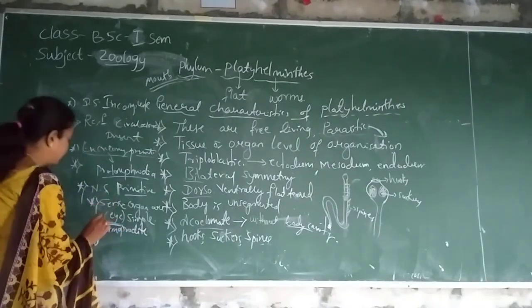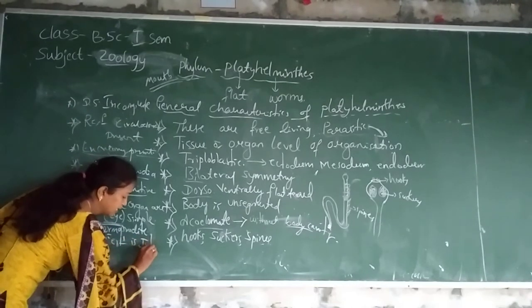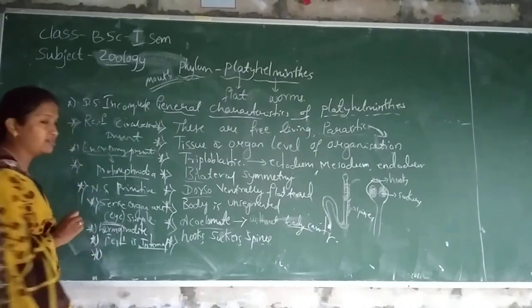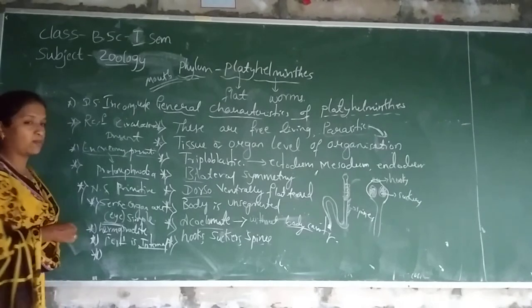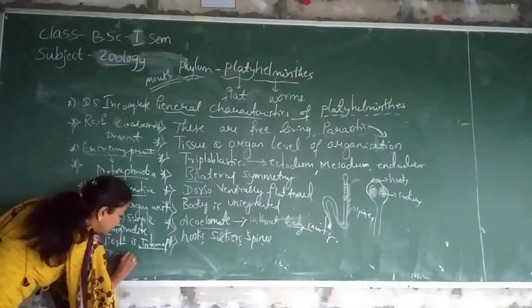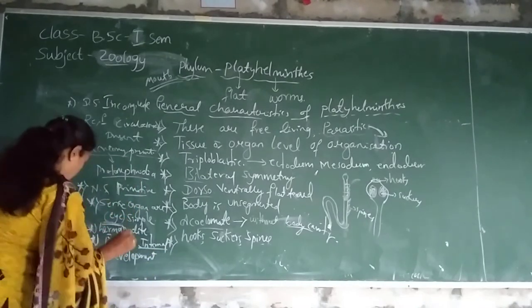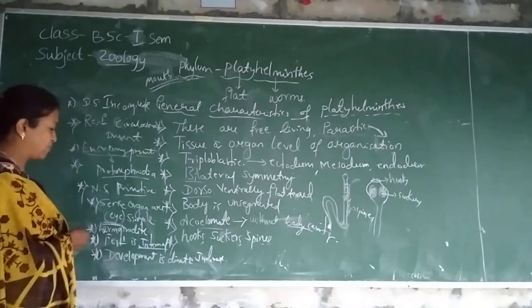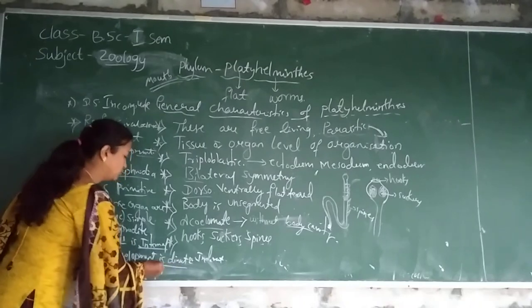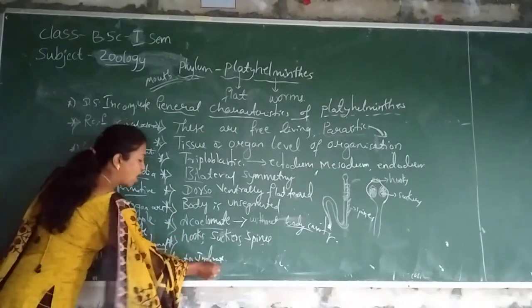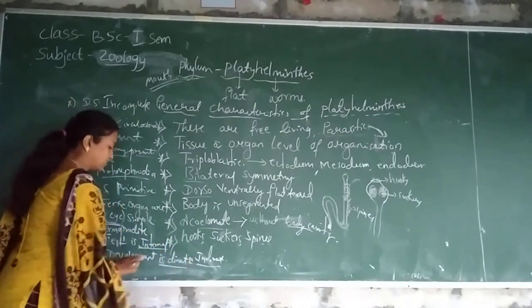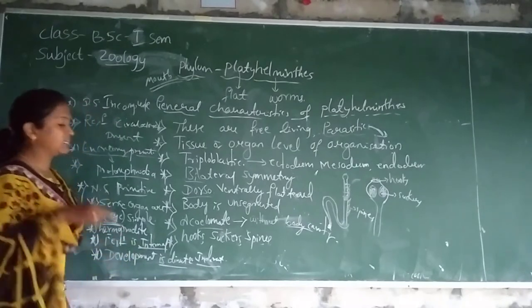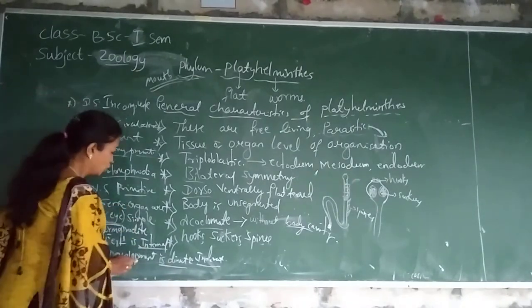The next one: fertilization is internal. They produce by internal fertilization, not external fertilization. The last characteristic of general characteristics is development is direct or indirect. Direct means they develop directly in the body; indirect means development occurs in another host body. The development of platy elemntis may be direct or indirect.